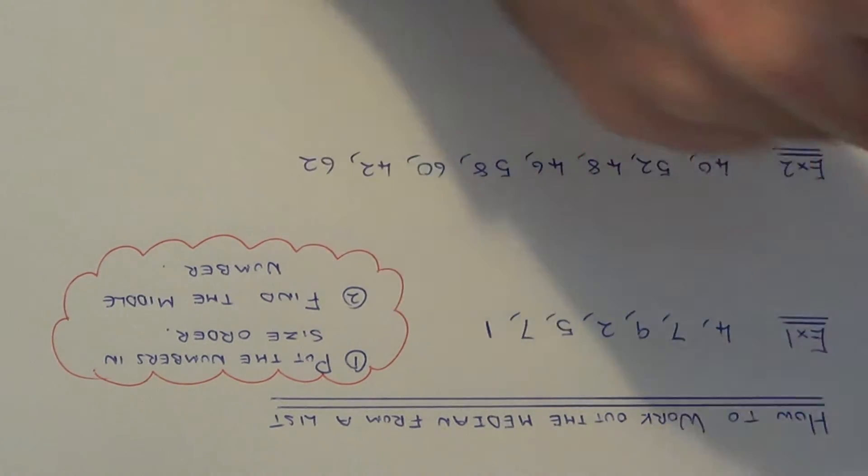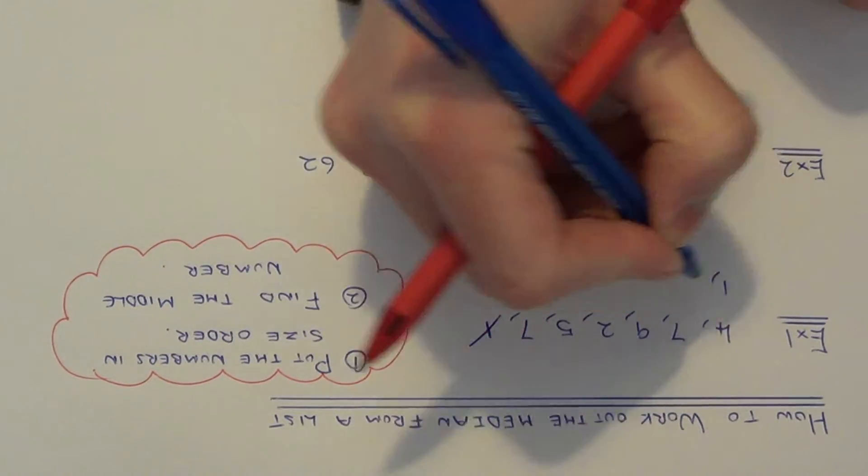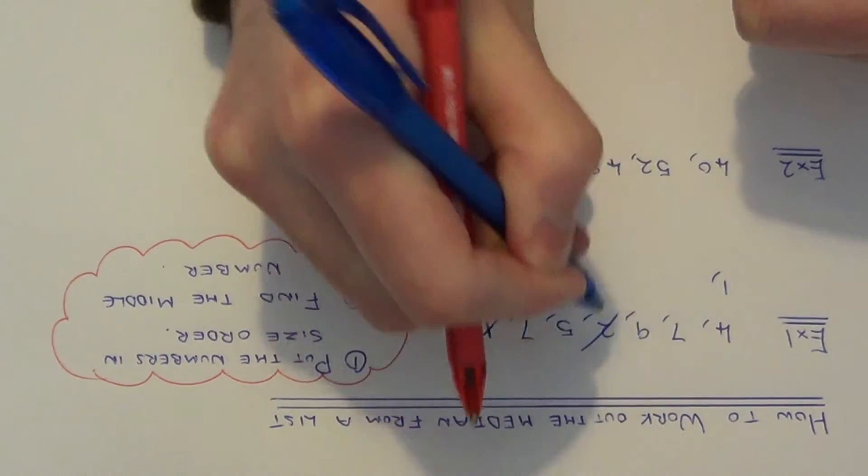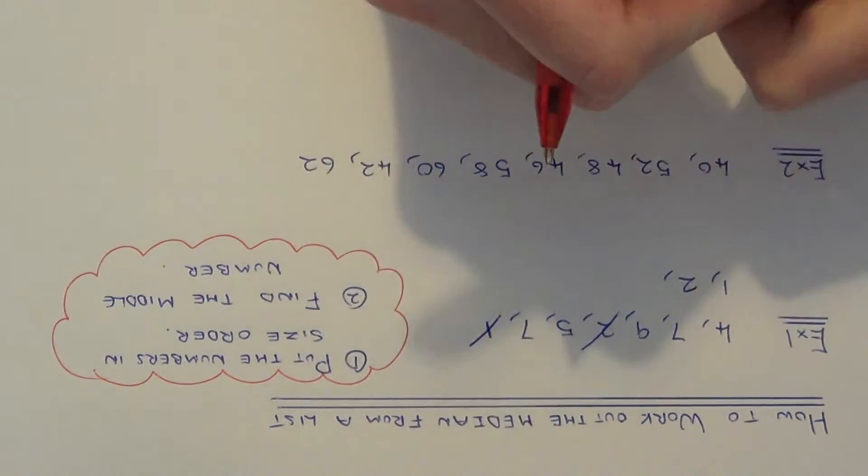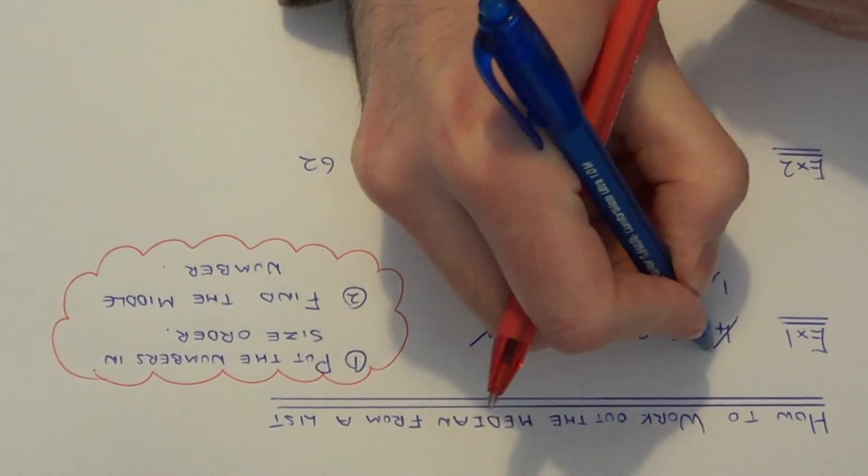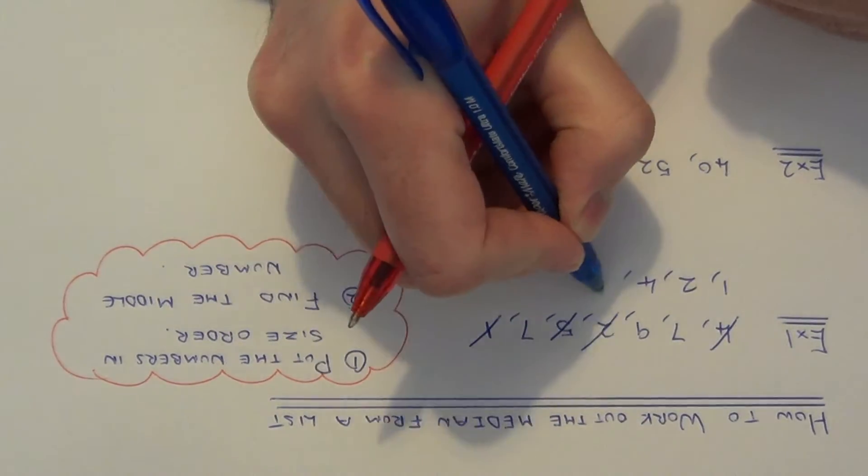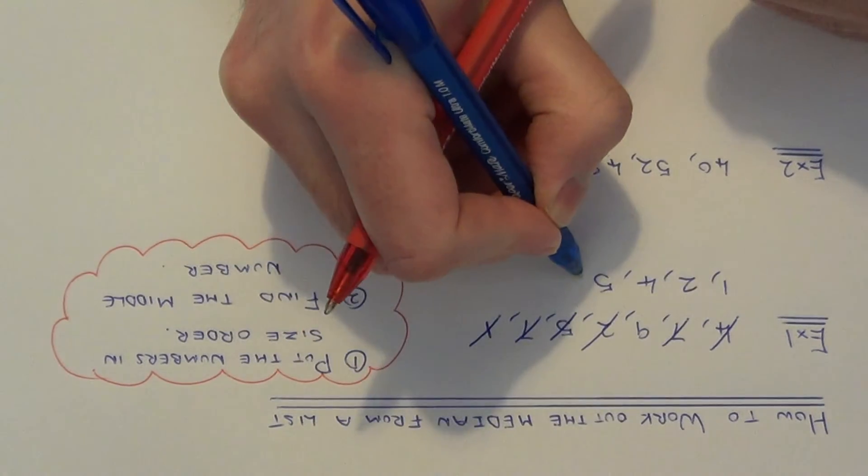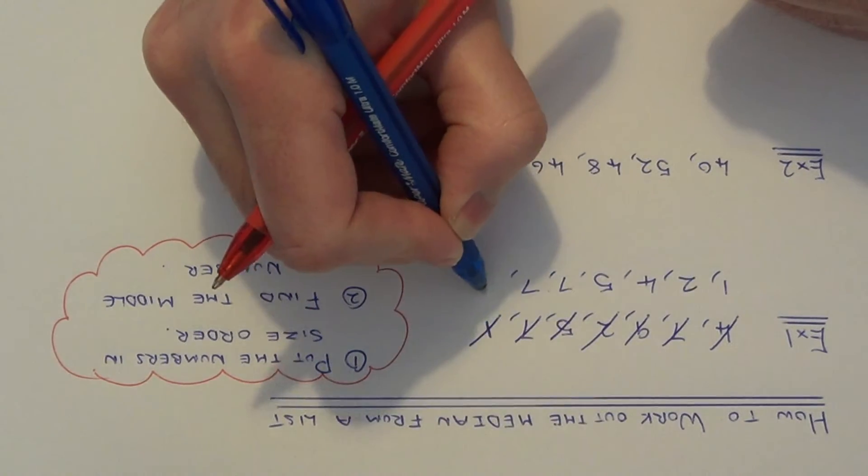So let's put the numbers into size order. So one is our smallest. Two comes next. Then we've got four. Then we've got five. Then we've got two sevens. And our final number is nine.